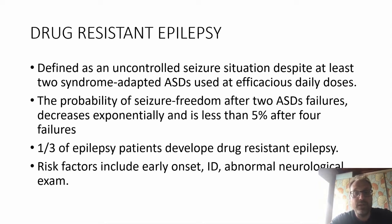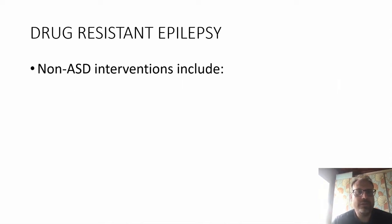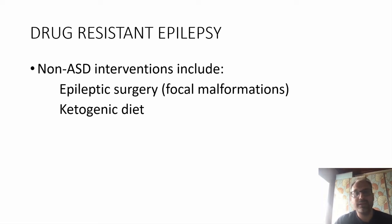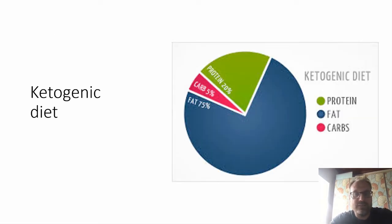About one-third of all epilepsy patients develop drug-resistant epilepsy, and risk factors include early onset, intellectual disability, and abnormal neurological exams. When in this situation, several non-pharmacological interventions can be explored. The first is epileptic surgery — trying to locate an area of the brain causing seizures and remove it — but in CDG this is usually hard because patients often have multifocal or generalized epilepsy, making it impossible to identify one causative area. You can also use a ketogenic diet, which is very high in fat and very low in carbohydrates.